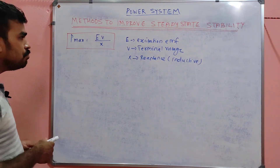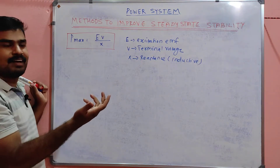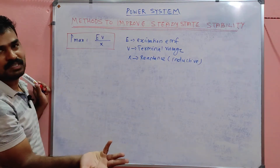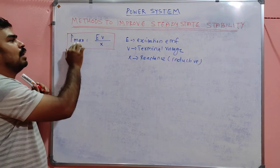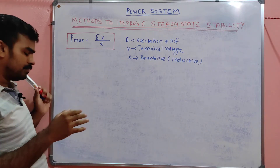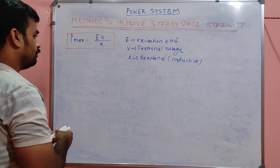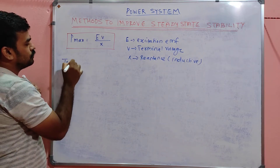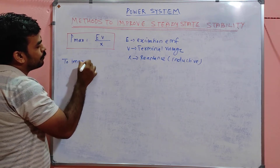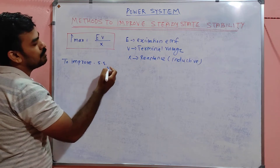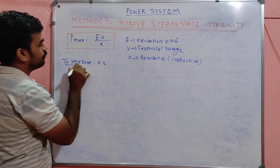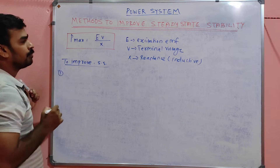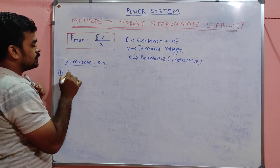So the answer to how we improve steady state stability is: how can we improve P_max? The first step to improve steady state stability involves noting several key points. First one: increase excitation.